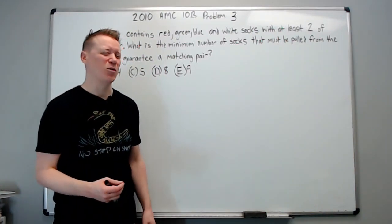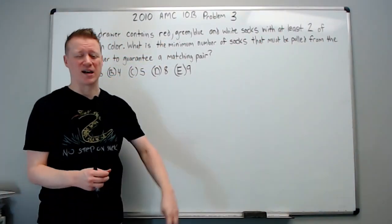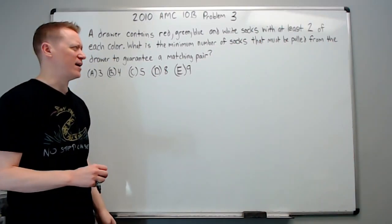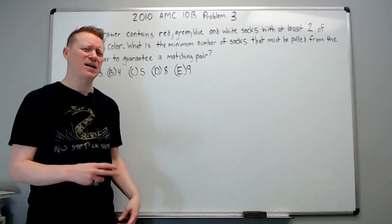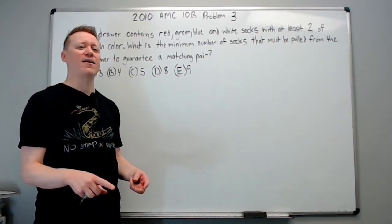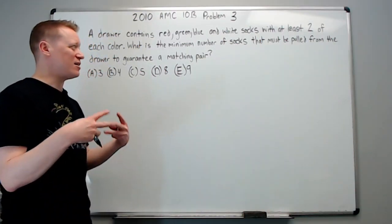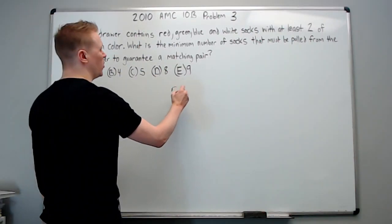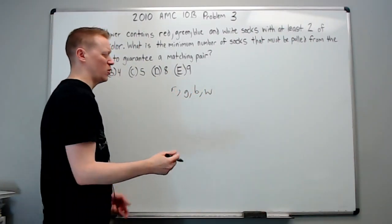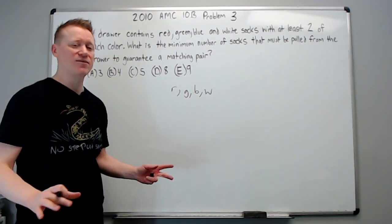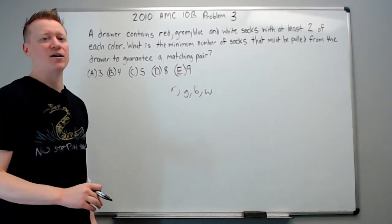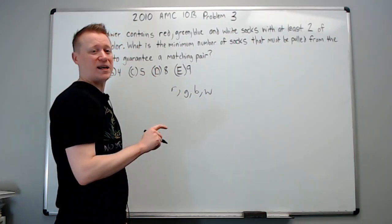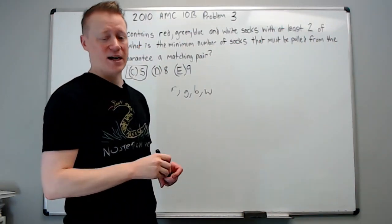And why do I call it worst case scenario? Well, pretend that you are drawing the socks out of the drawer, right? And your objective, what you want, is to get a matching pair. I mean, why would you want a non-matching pair, right? But you have the worst luck ever. And because you have the worst luck ever, you're going to probably have the worst case scenario. And so pretend that you win when you get the matching pair. Then what's the worst that could happen? The worst that could happen is you get one red, one green, one blue, and one white. Giving you four socks, none of which match. That's the worst case scenario. Now, on the next sock that you draw out, it must be one of these colors that you already have one of, which will give you a matching pair. Five is the answer.